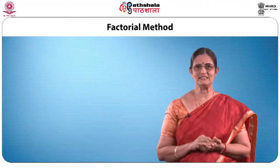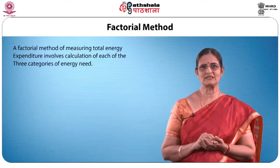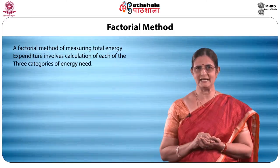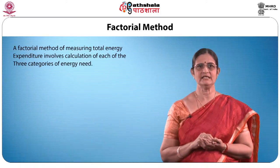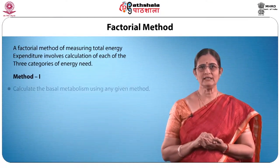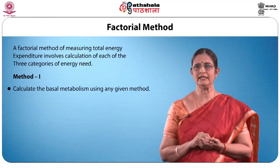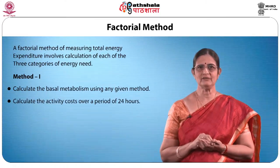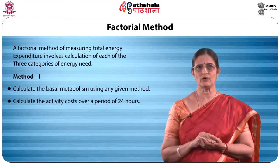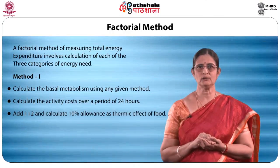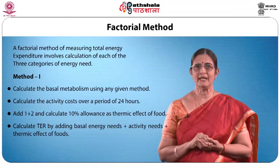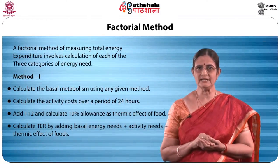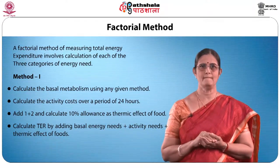The factorial method of measuring total energy expenditure involves calculation of each of the three categories of energy needed. Step one: calculate basal metabolism using any given method. Step two: calculate the activity cost over 24 hours. Step three: add steps one and two and calculate a 10 percent allowance as thermic effect of food. Then calculate total energy requirement by adding basal energy needs, physical activity needs, and thermic effect of food.